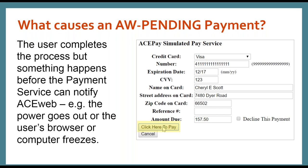Another scenario, also pretty rare: if the student goes to the Gateway site, puts in their card information, and authorizes it, but something happens before that information can return to ACEweb, it's going to leave an AWPending registration and payment. One common example would be if your Gateway has a return link — so after authorizing the card it shows a success page — but there's a button at the bottom that says 'click here to return to ACEweb.' If they don't click that button, the posting information is never sent back. We'll talk about the silent post feature that should eliminate cases like this.